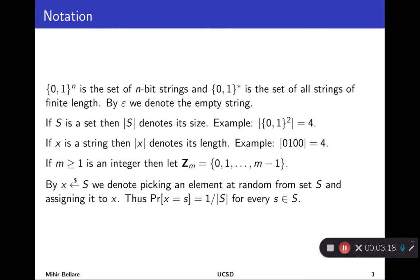The set Z_m is all integers in the range 0 up to one less than m. Intuitively, think about it as all the possible remainders if you divide numbers by m.